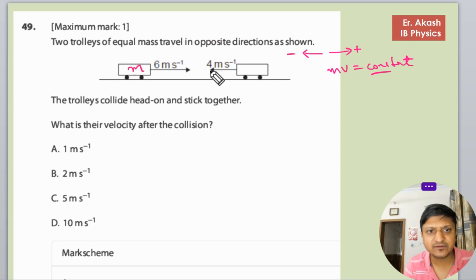Just say like this is M, this is M. So 6M, this is minus 4M.